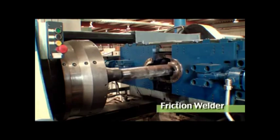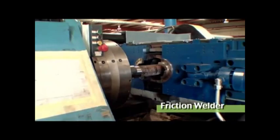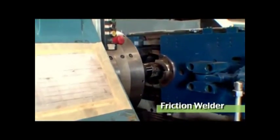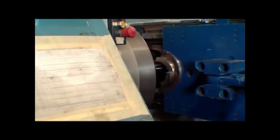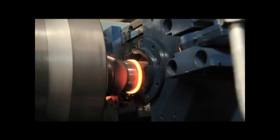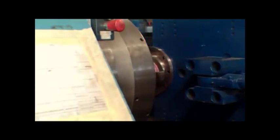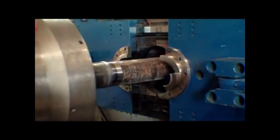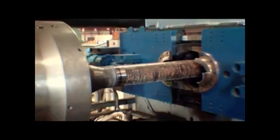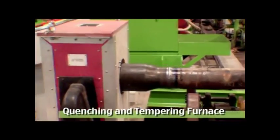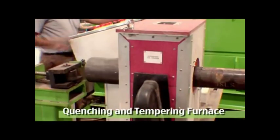The pipes are then friction welded with a tool joint. The weld zone is quenched and tempered to achieve the desired properties. The weld beads are ground to achieve an even surface.